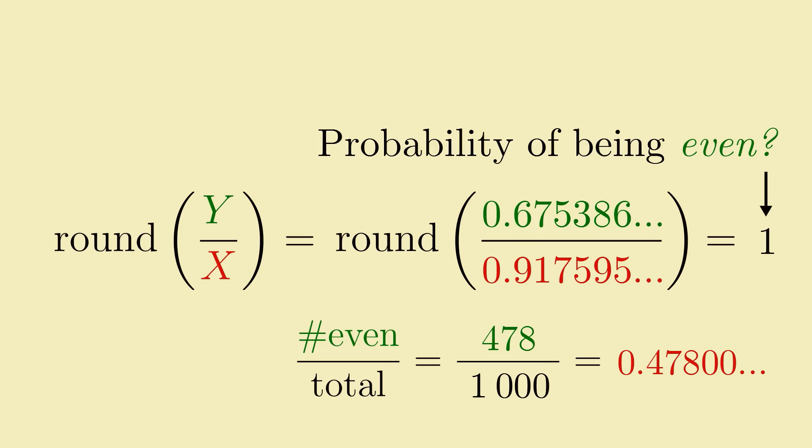Still, we only tested 1,000 quotients, so it's possible the true probability is close to, but not exactly, 0.5. Let's run through some more quotients. Say, up to 10,000, and see if it zeroes in on 0.5, or if it stays a bit off.